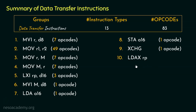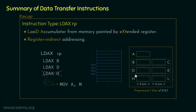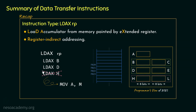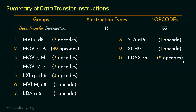The tenth type is LDAX RP, which we studied after covering addressing modes. LDAX RP stands for Load Accumulator from the memory pointed by the extended register. There are two instructions of this type: LDAX B and LDAX D, using register pairs BC and DE — not HL, because MOV A, M already performs a similar function for HL. So with this type we covered two more opcodes.